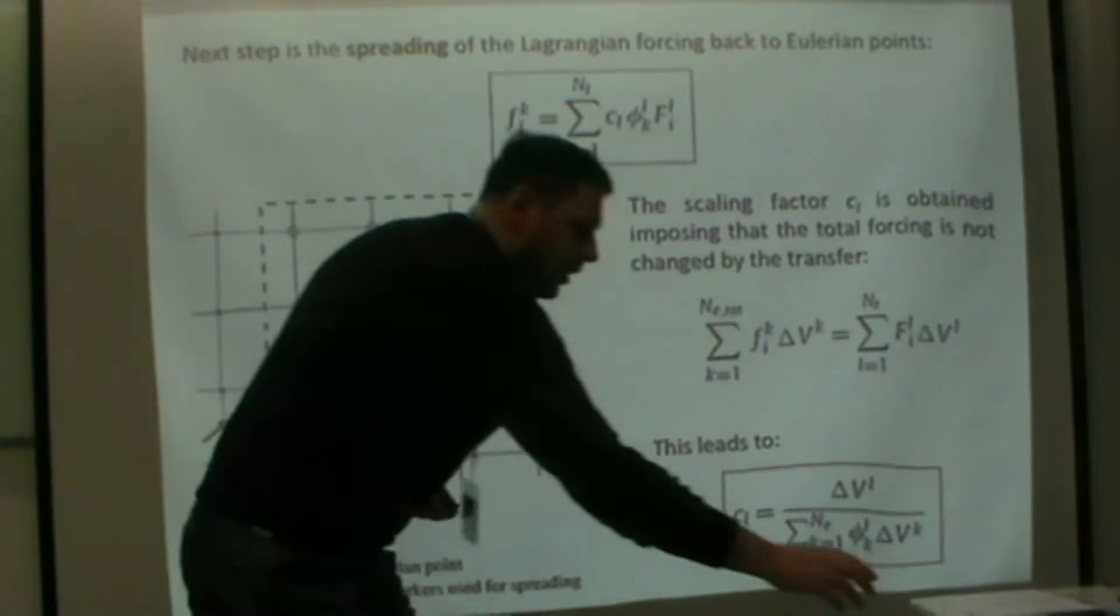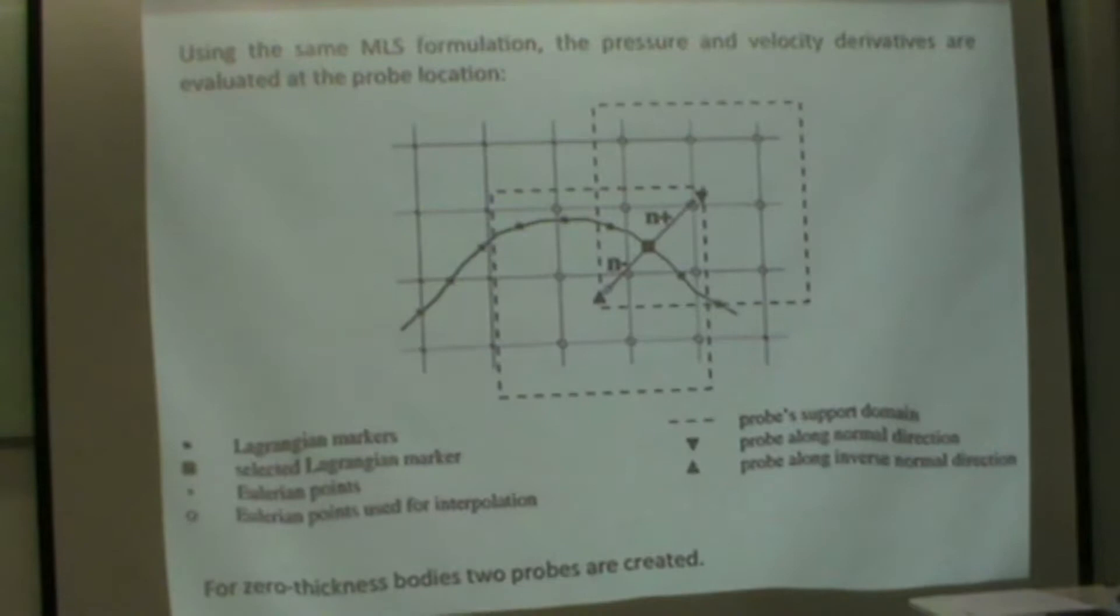Another crucial part of the algorithm is the evaluation of the forces. We ensure the velocity of the solid equals the velocity of the fluid by imposing forcing terms in the Navier-Stokes equation. But we also have to impose continuity of the forces on the surface. Since we want to be accurate both globally and locally, we evaluate forces using probes. Given Lagrangian points, we send two probes, one in the normal direction and one in the opposite normal direction, and we evaluate pressure and velocity gradients. We are far from the forcing region, so we obtain very smooth fields for both velocity gradients and pressure.